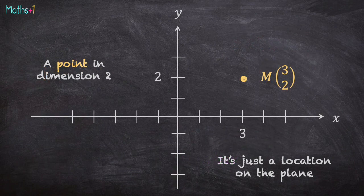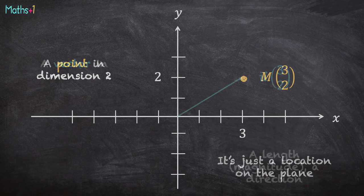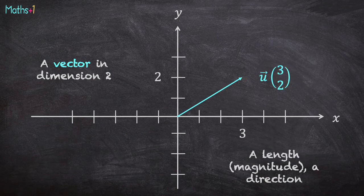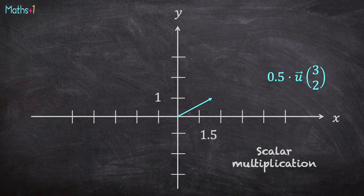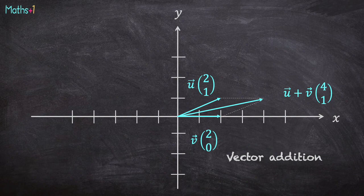A point in dimension 2 is just a location on the plane. It has two coordinates. A vector in dimension 2 has two coordinates. It represents a length and a direction. It is possible to multiply a vector by a number called a scalar. This operation is called scalar multiplication. If you have two vectors, you can add the two vectors. This operation is called vector addition.